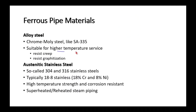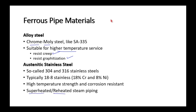For higher temperature service, we use alloys — commonly chromoly steels, which are creep-resistant and resist graphitization. There are also austenitic stainless steels used at high temperature for superheaters and reheaters. Austenite is face-centered cubic (FCC) as opposed to ferrite, which is body-centered cubic (BCC).